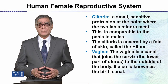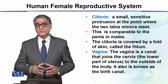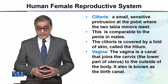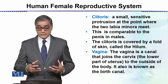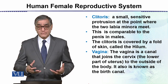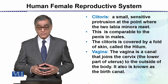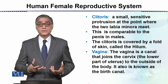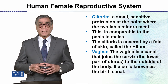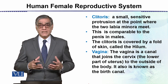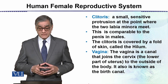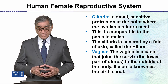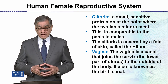There is another structure called the Clitoris, which is comparable to the Penis in males. It is very sensitive to touch, and sexual excitement is due to the stimulation of the Clitoris. The Clitoris is covered by a fold of skin called the Hilum.